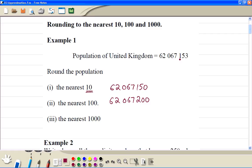To the nearest thousand, we look at this figure, because 4 or less, so we don't round this number 7, we leave it as it is. So the answer is 62,067,000. That's it.